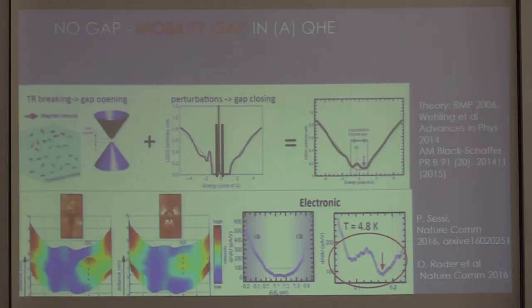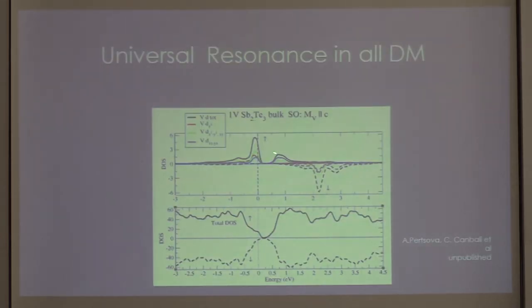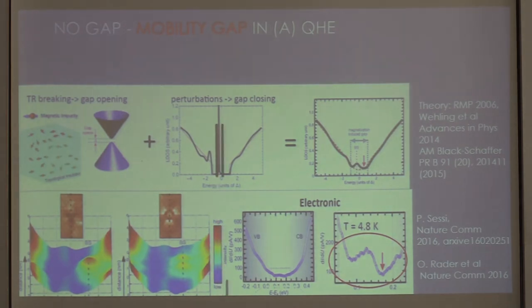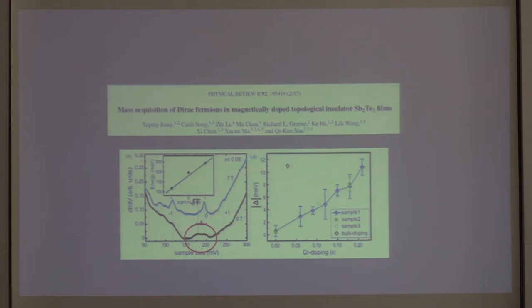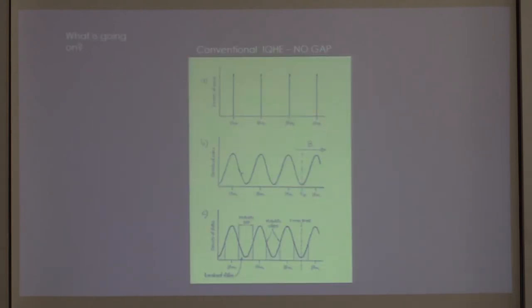If the magnetic impurities were somewhat ordered — say, they formed a lattice — you would still have to deal with the impurity band forming inside the gap, which is actually pretty much the case for a neodymium-doped supercell calculation as well.